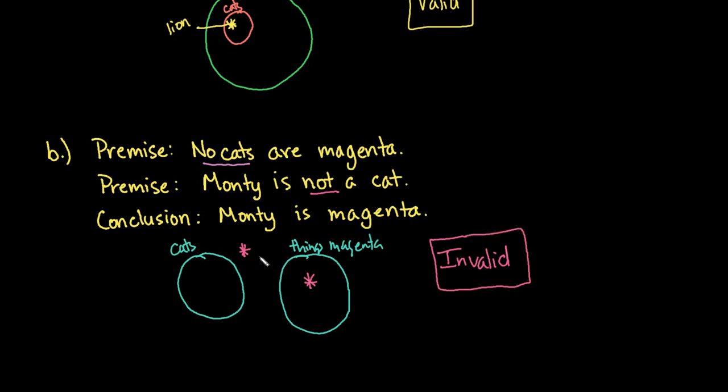So in order to be valid, there's only one place that you can put the little icon to represent what you're talking about. So like we had the lion up here, there was only one place and it's inside of both circles. So if it's inside of cats it has to be inside of mammals, where this one down here, we just know that Monty is not a cat. So he could be inside or he could be on the outside of both circles, or it's possible that Monty could be magenta and fall inside of this circle as well. So since there were two places that I could put the representation of Monty, it's an invalid statement.